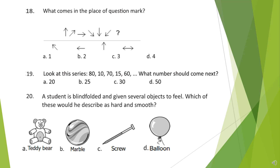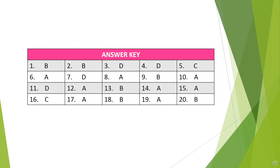Question 20: A student is blindfolded and given several objects to feel. Which of these would he describe as hard and smooth? Look at the pictures given below and write down your answer. This is the answer key for this question paper. Compare your answers with it. Thank you.